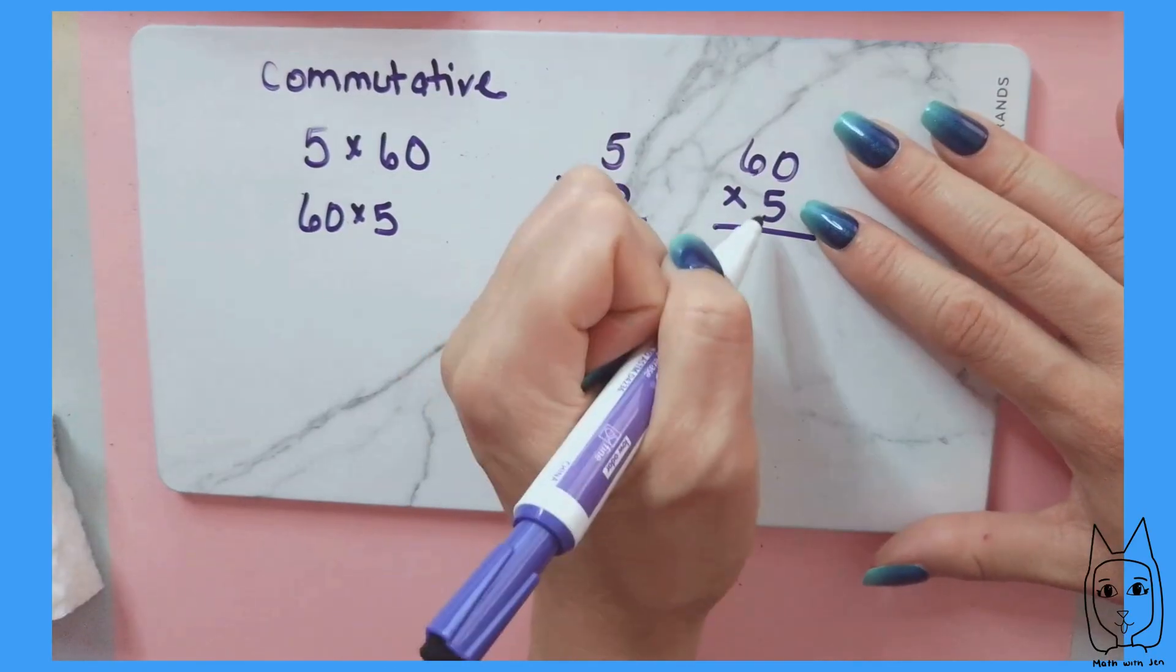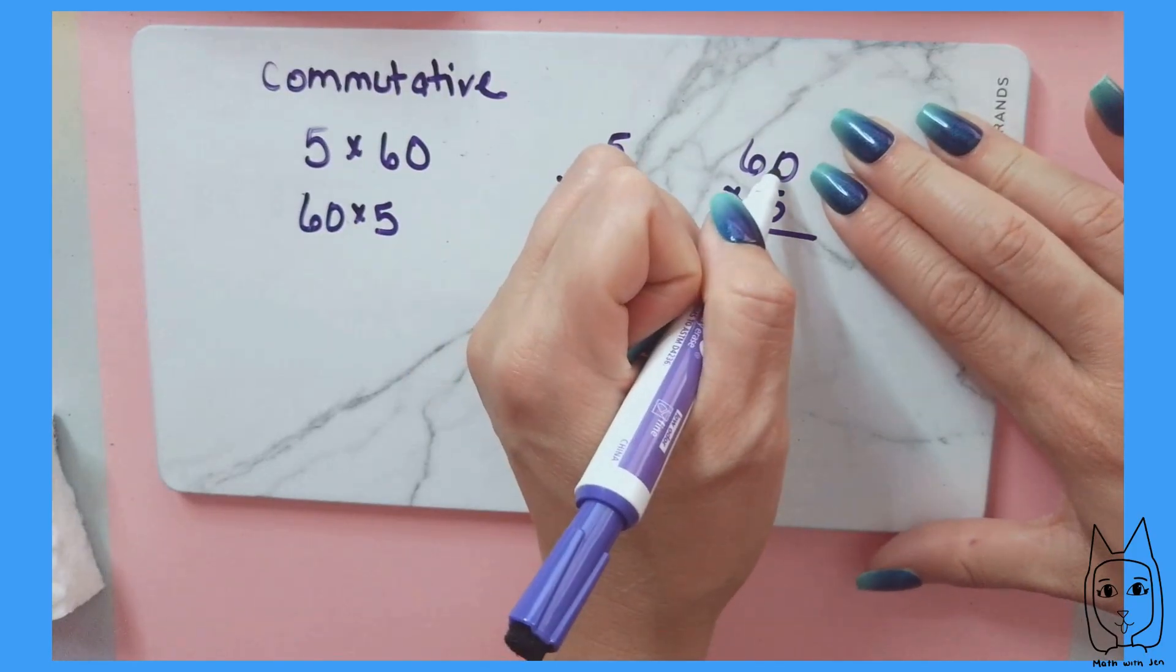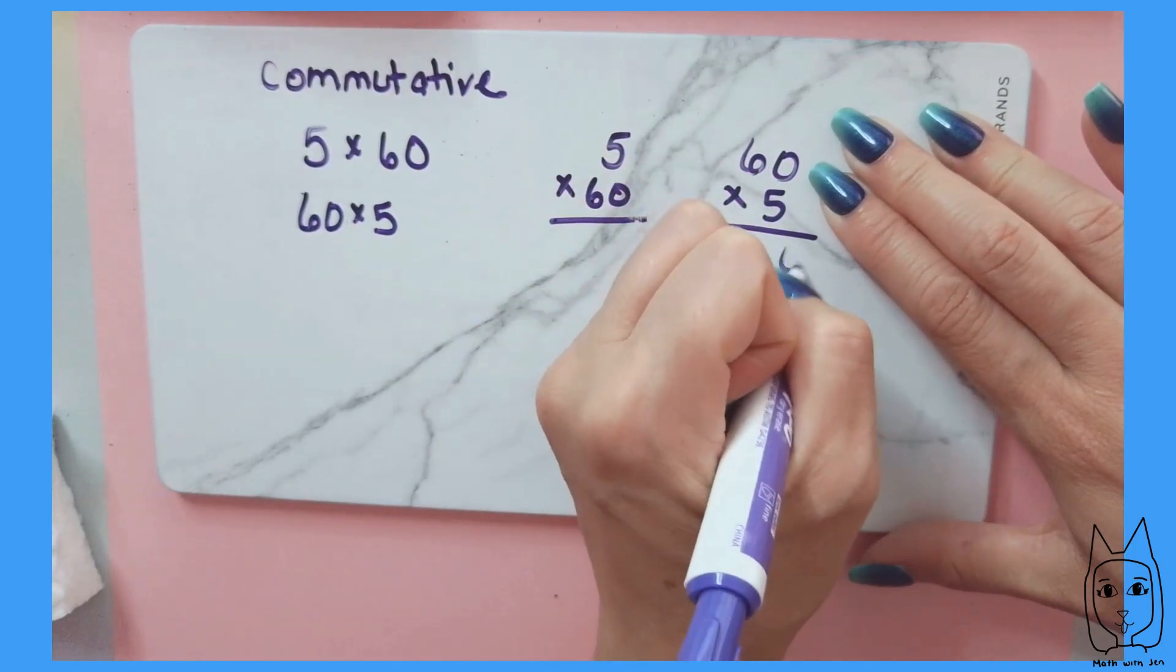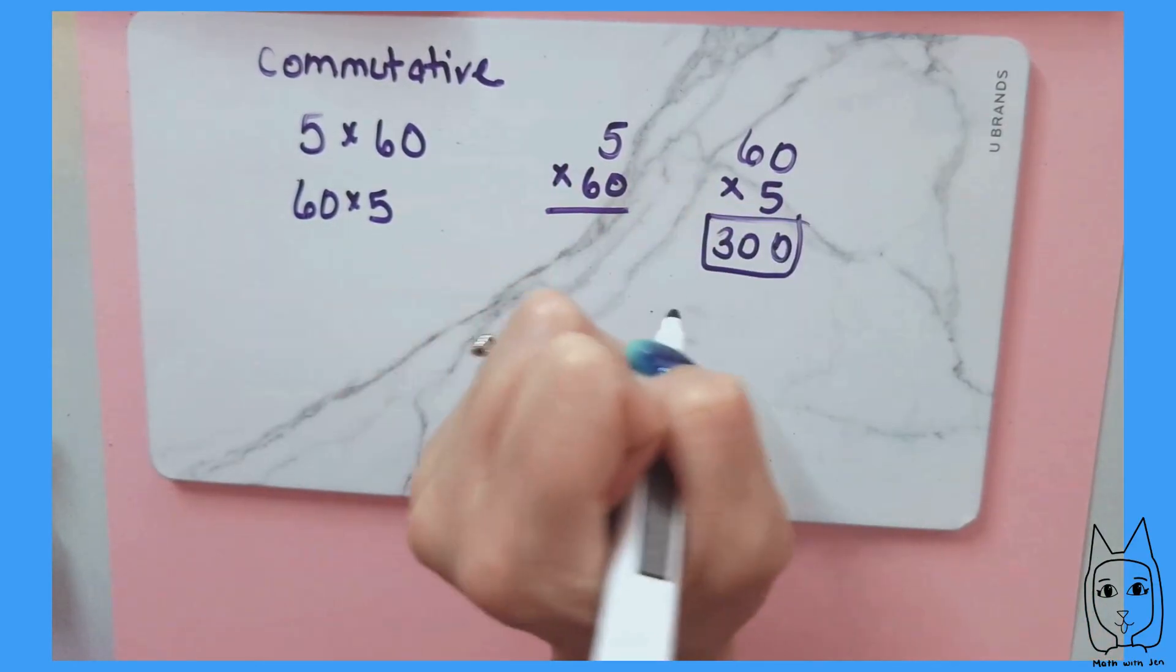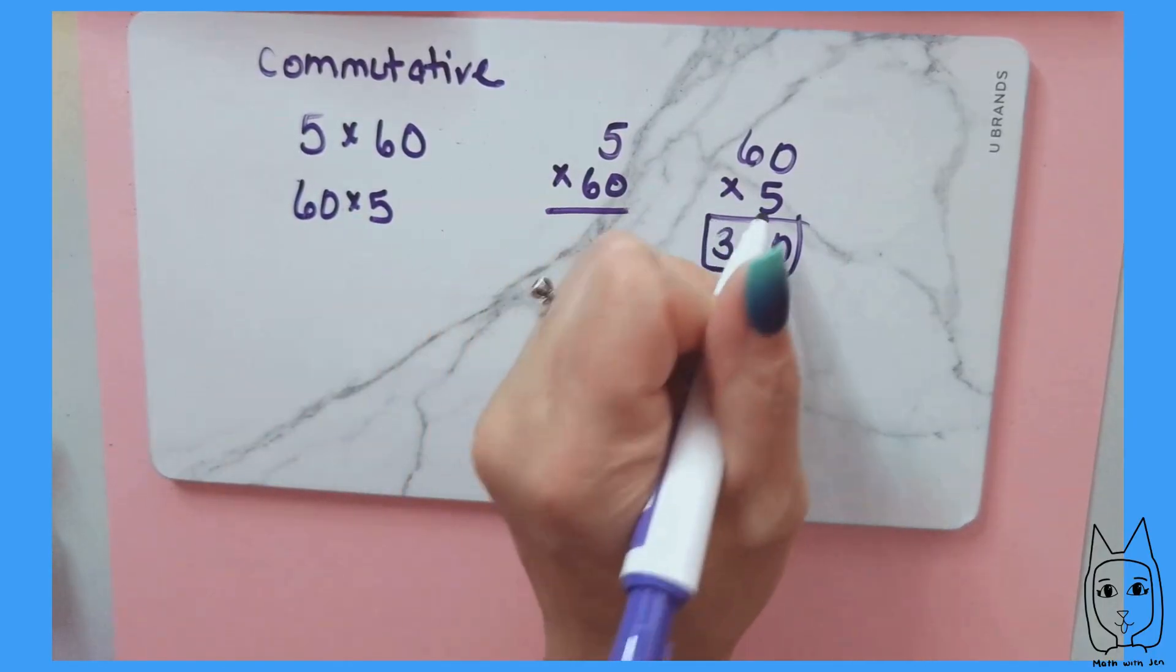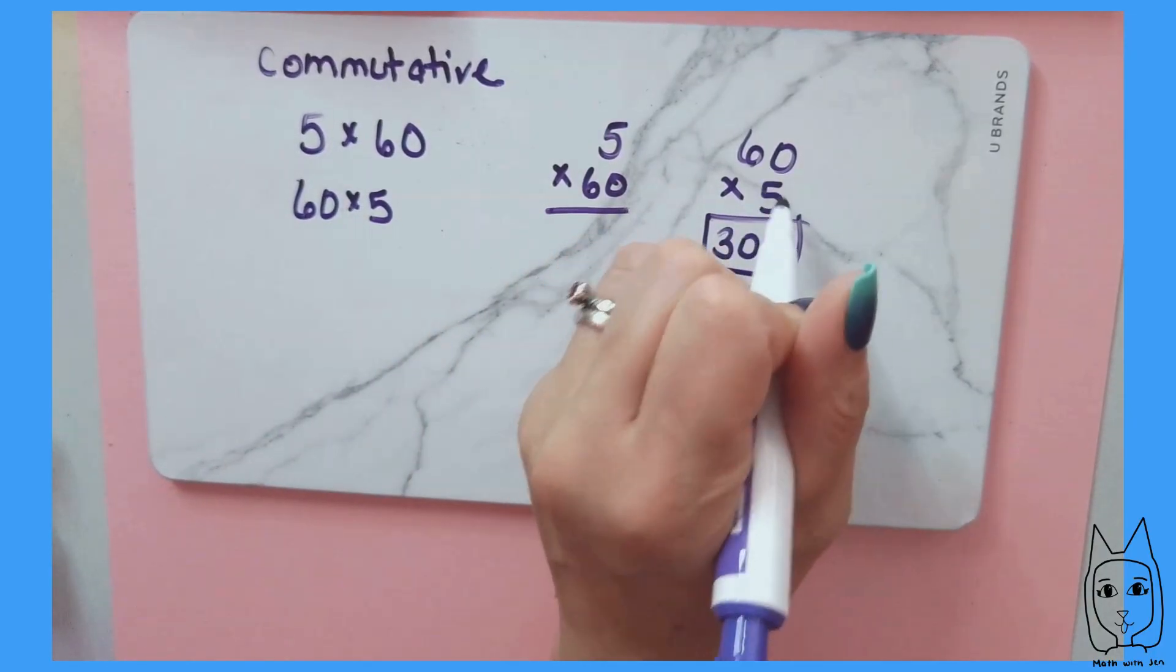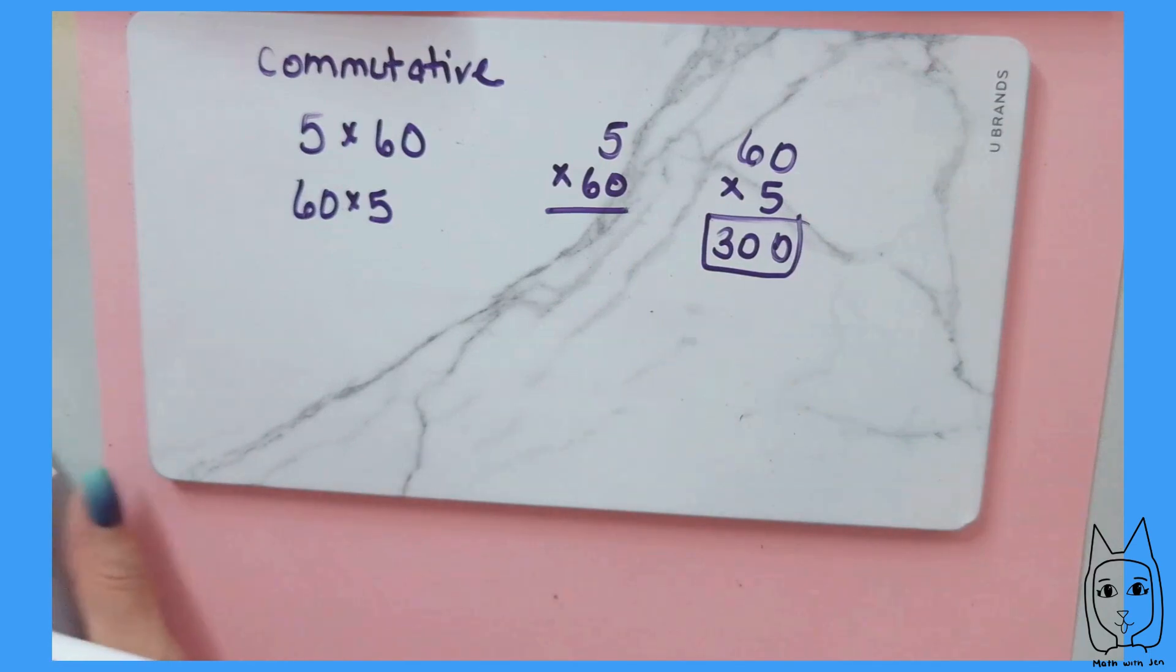A lot of times it's easier to multiply if you put the smaller number as the multiplier. You can do 5 times 0 is 0, 5 times 6 is 30. Either way you're going to get 300, but it's easier when you put the smaller number as the multiplier. That's the commutative property.